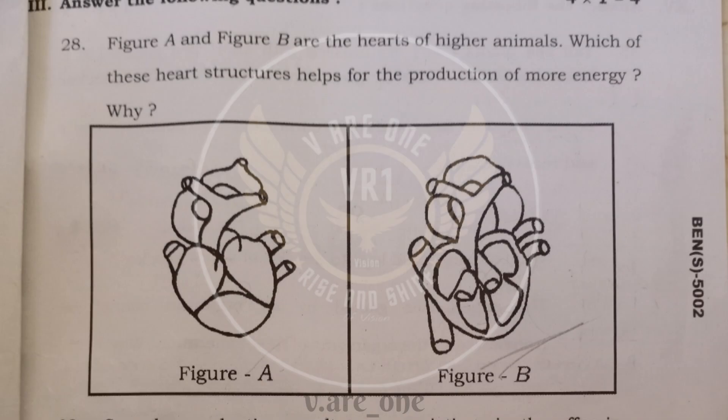In 28th question, figure B, it will produce more energy because we have 4 chambers. There is complete separation of oxygenated and deoxygenated blood. So, we will get more energy.